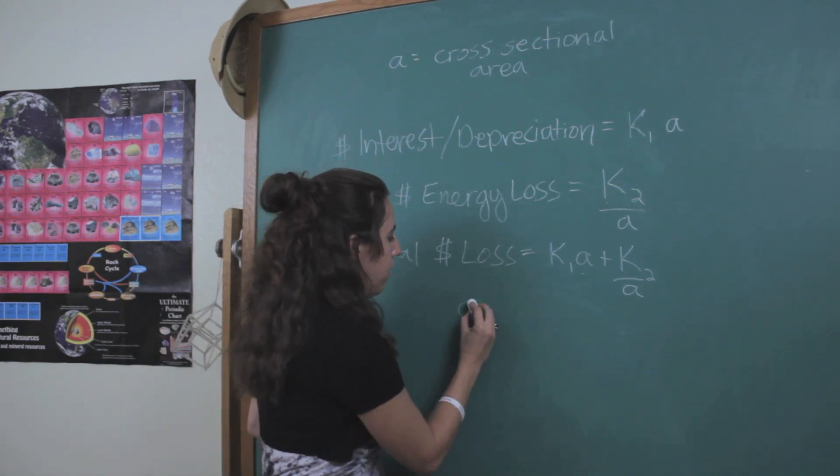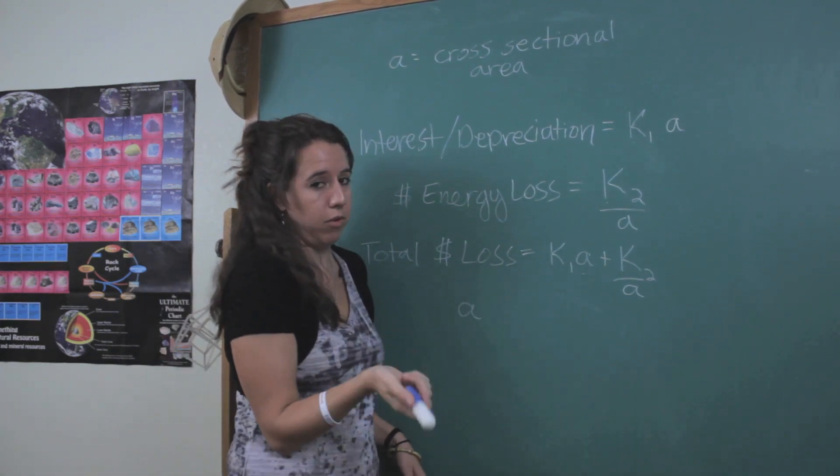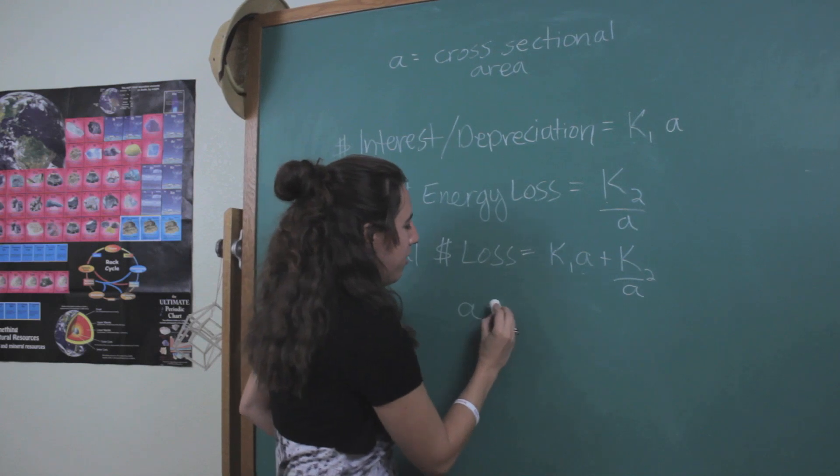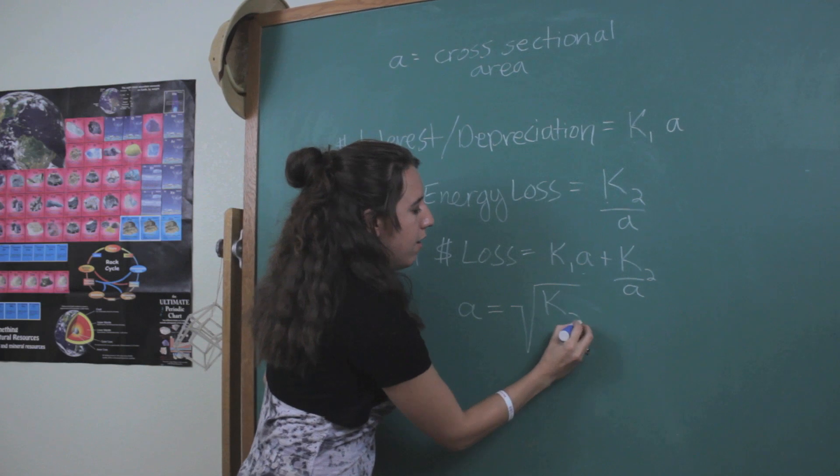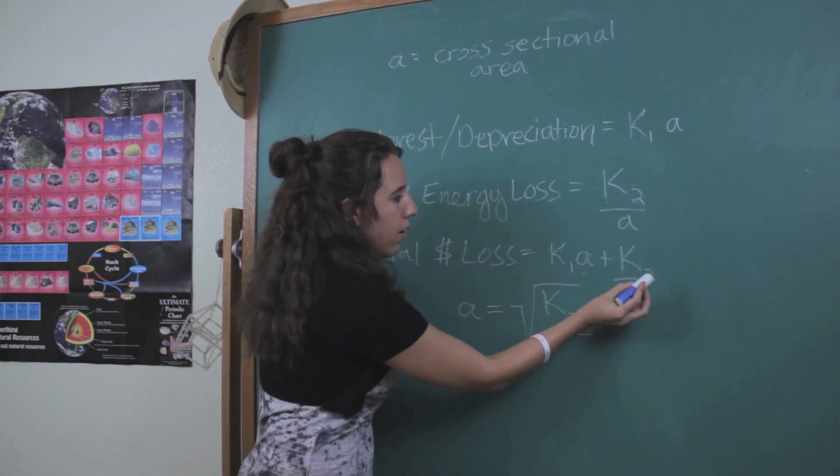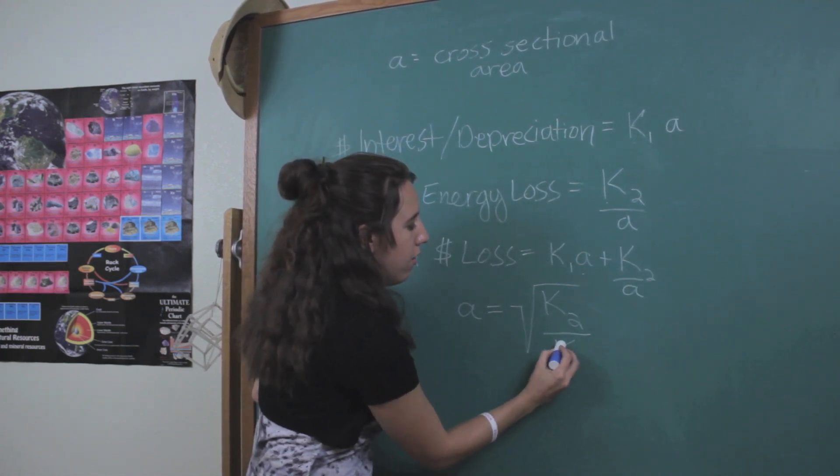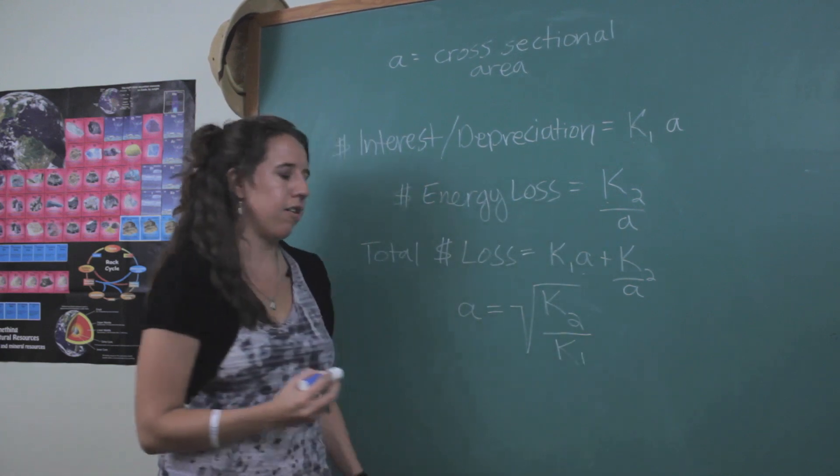And when you do that, sorry, the derivative with respect to A. And when you do that, you're going to end up with the square root of your second K value divided by your first K value.